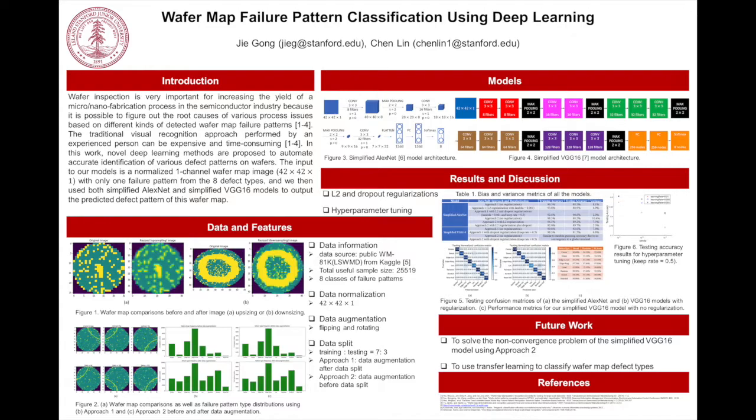It turns out that lambda is the most sensitive parameter to our model. To summarize, in this work we implemented a simplified AlexNet and VGG16 network for wafer pattern classification, and both networks beat the machine learning benchmark on Kaggle. Thanks for your attention. Please email us for any questions.